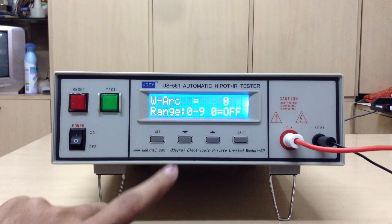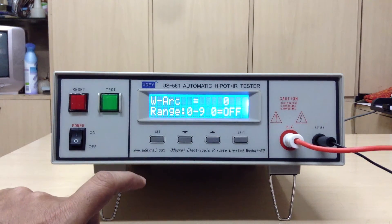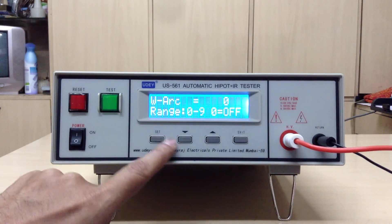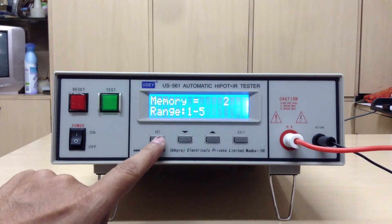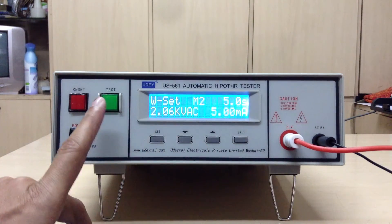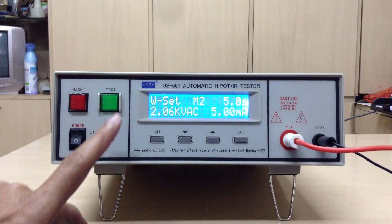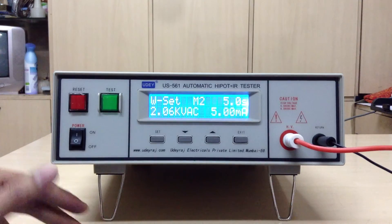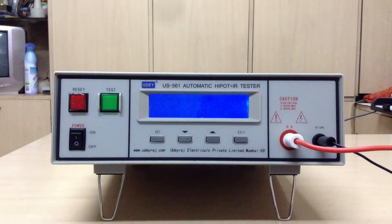And then arc—you can select number of arcs from 0 to 9, where 0 stands for off. After this all selection is done, you need to press exit and the tester is set to test the product under test. Thank you.